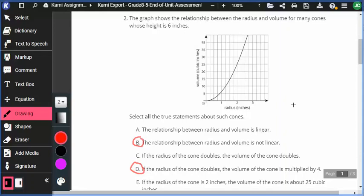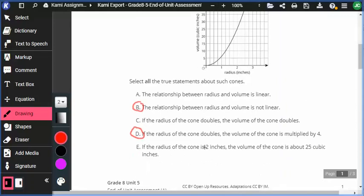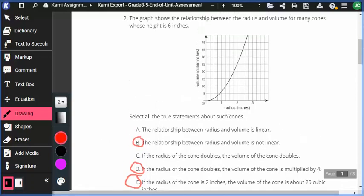I'm using the graph to figure that out, by the way. If the radius of the cone is two inches, the volume of the cone is about twenty-five cubic inches. So, radius of two, volume, it's a little over twenty-five, but it's close enough. We can say that's true. It's about. It does say about, right? So we can say if it's within a couple, that's totally fine. So B, D, and E are actually the true statements out of here.